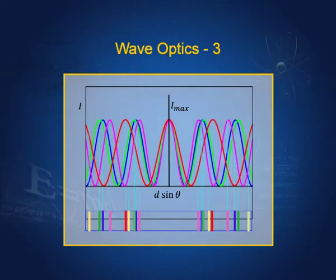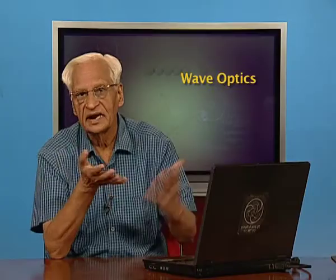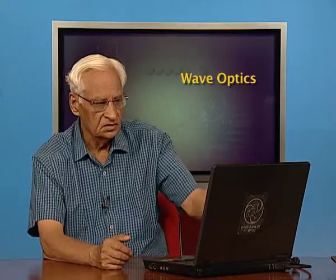Now, in this lecture, we shall calculate the intensity pattern — how the intensity varies on the screen. For intensity distribution in the fringes: since the two slits represent coherent sources, the frequency of light passing through them will be the same and the phase difference between the two will be constant. That is the definition of coherent sources.